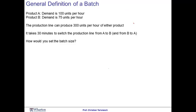However, I will now argue that this definition needs some generalization to be really useful for more interesting cases. Consider a firm that is making two products, A and B — cheeseburgers and veggie sandwiches. Demand for A is 100 units per hour, and demand for B is 75 units per hour. The production line can make 300 units per hour of either product, and so our processing time P is simply 1/300 hours per unit. It takes 30 minutes to switch production from A to B, and so we have a setup time of half an hour.